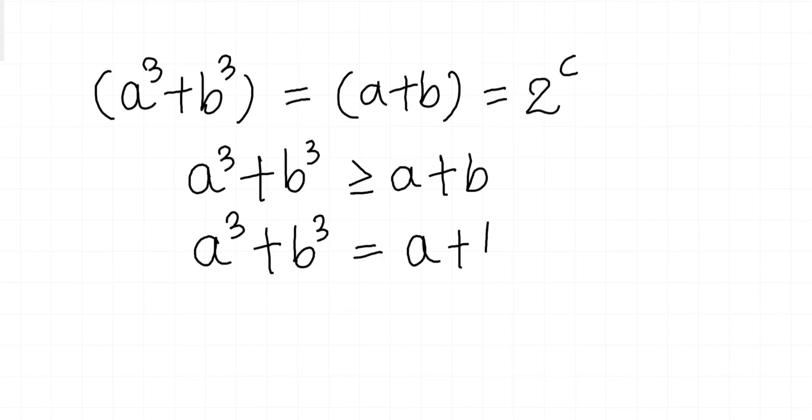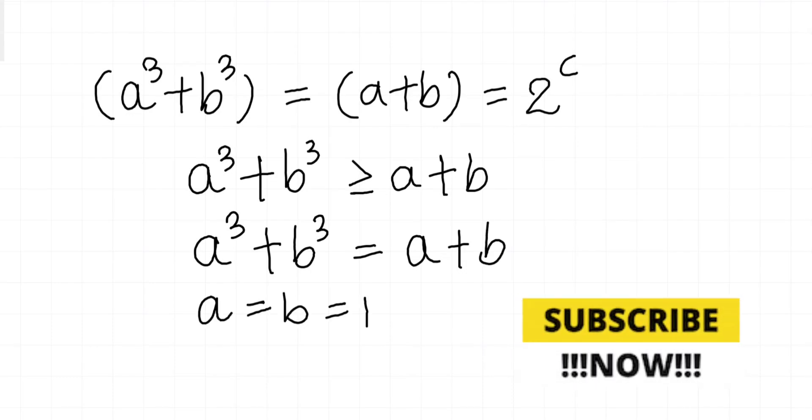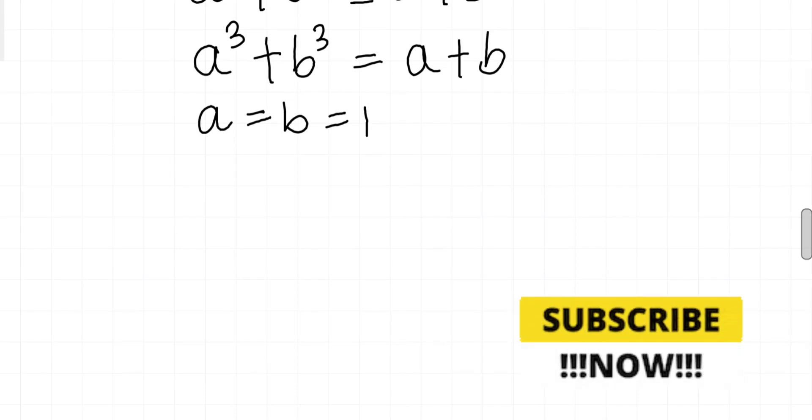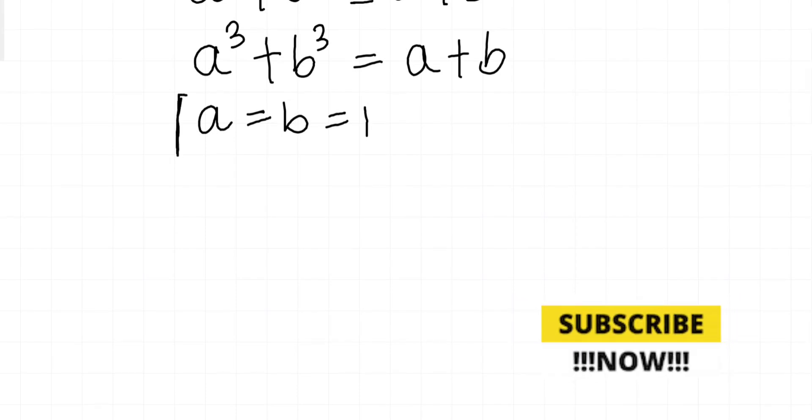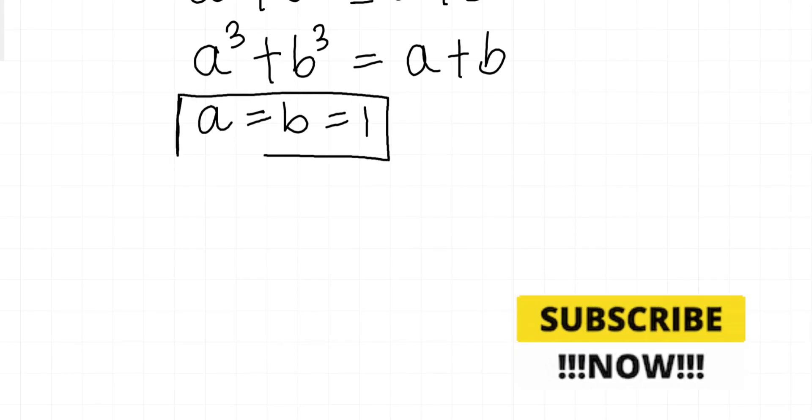And both of them are 1. So we can conclude that in this equation, A and B must be equal to 1, and both are odd.